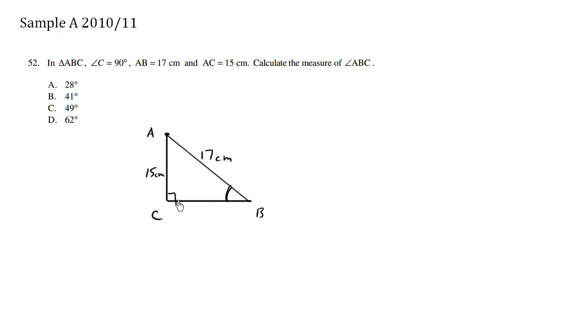Now because we have a right angle triangle, we can use our basic trig ratios. I'm going to call this angle B, or angle ABC.